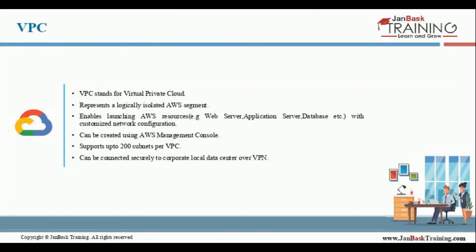VPC represents a logically isolated AWS segment. It enables launching AWS resources such as web servers, application servers, and databases with customized network configuration.